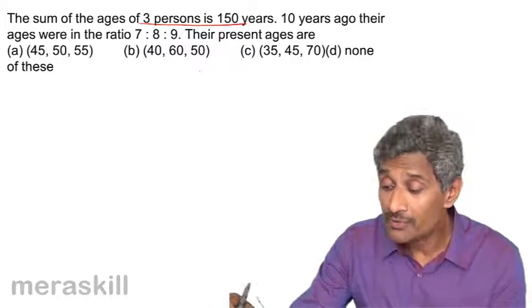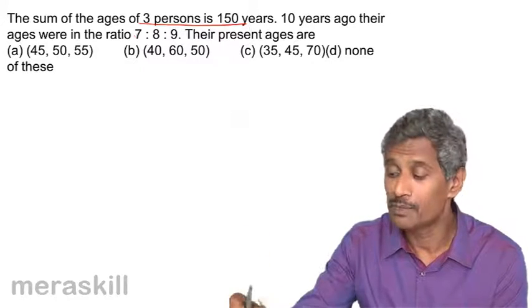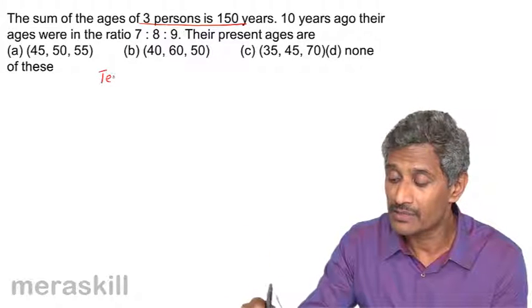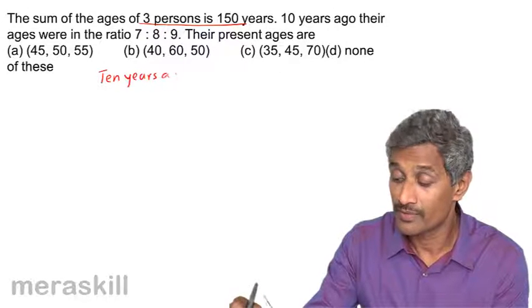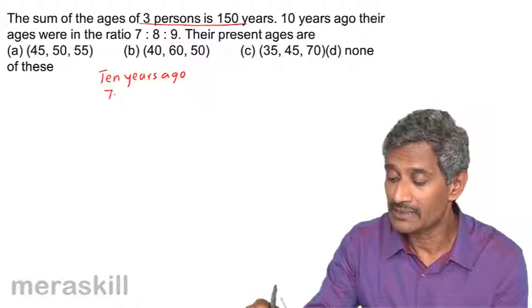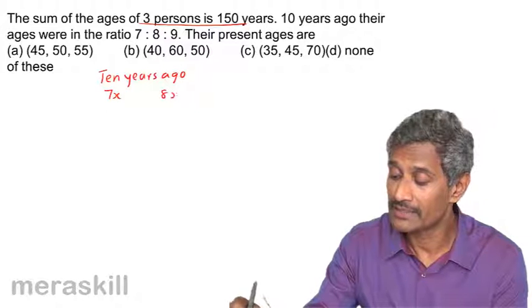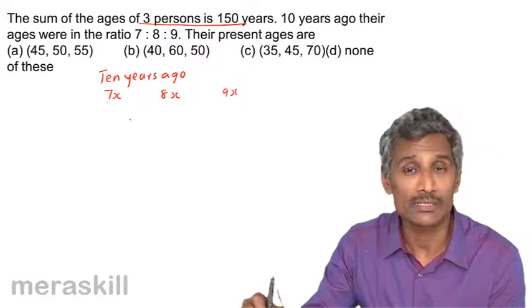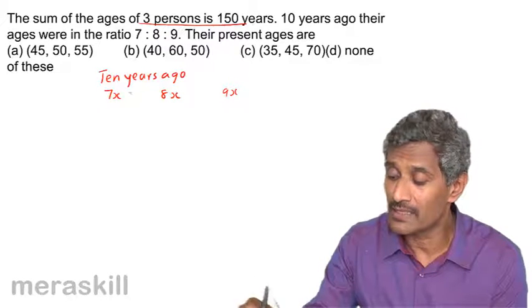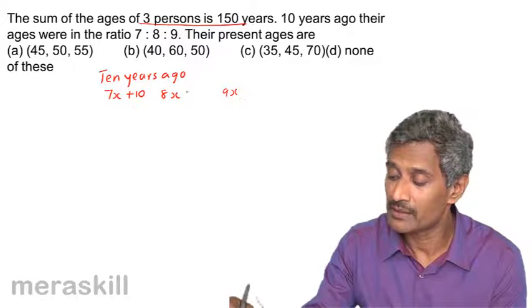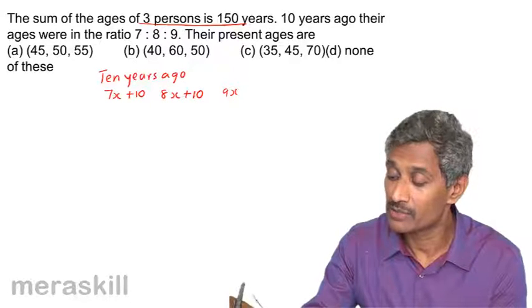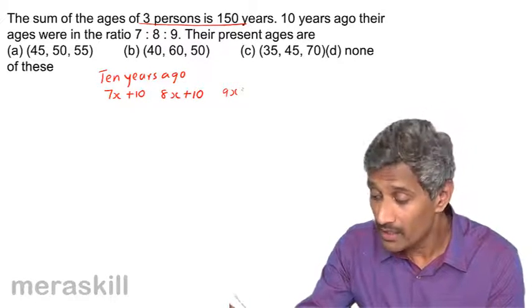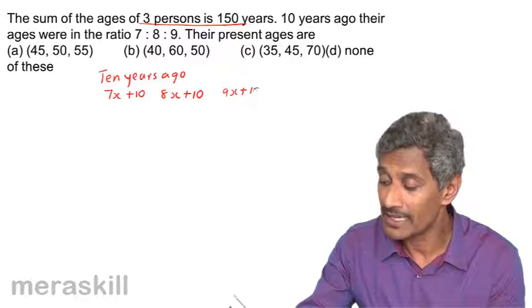So we have to start from here and put it futuristically. We need to take their ages 10 years ago. The ratio has been given as 7x, 8x and 9x. So 10 years ago it was this, and presently the ages will be 7x plus 10, 8x plus 10, and 9x plus 10.